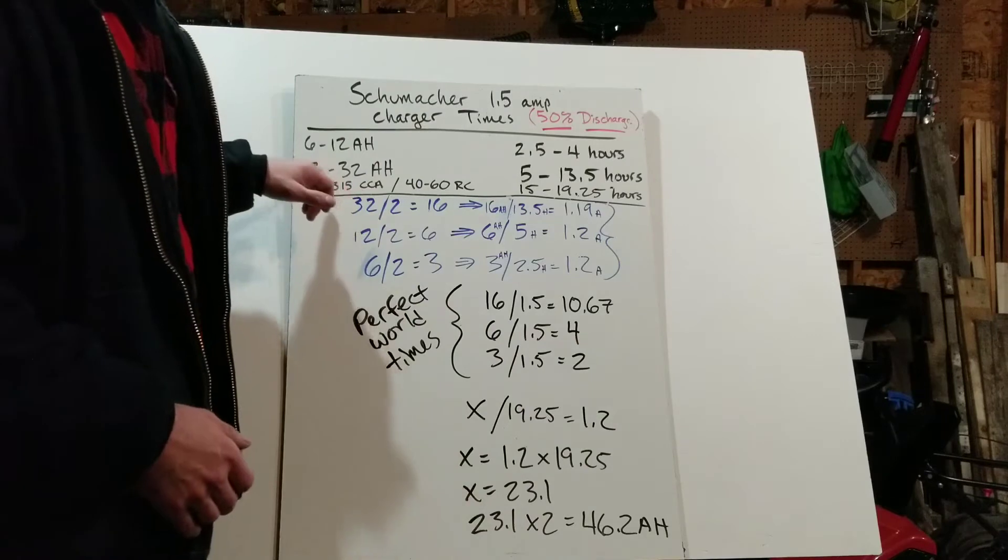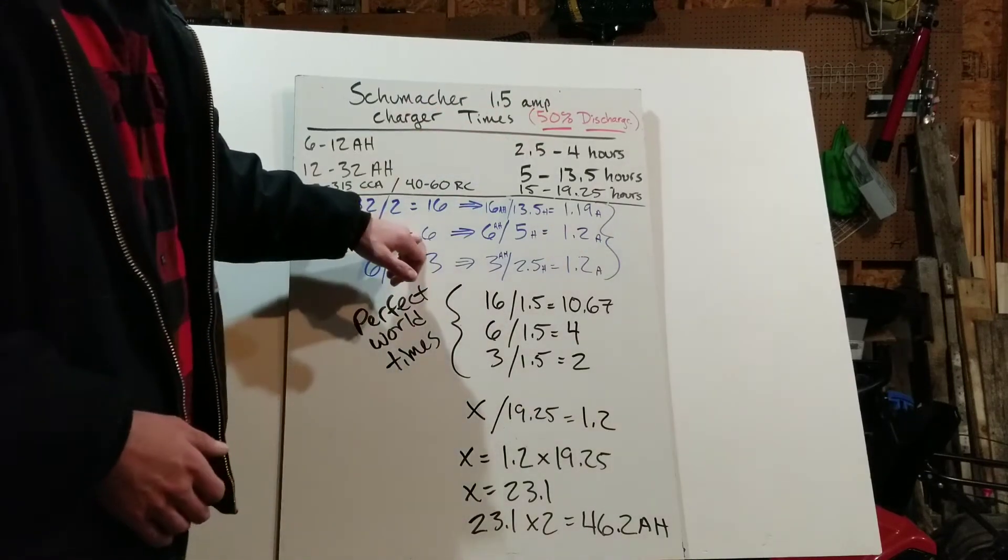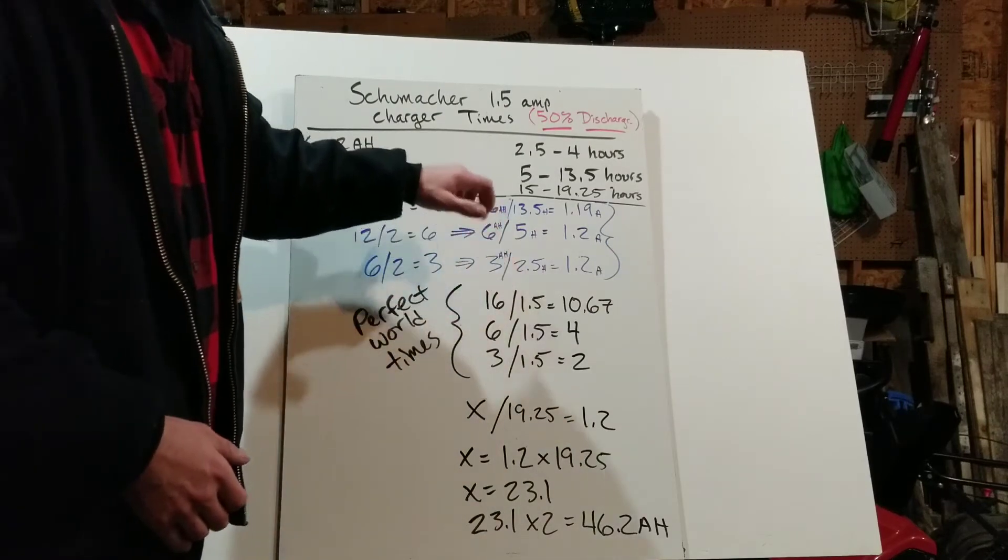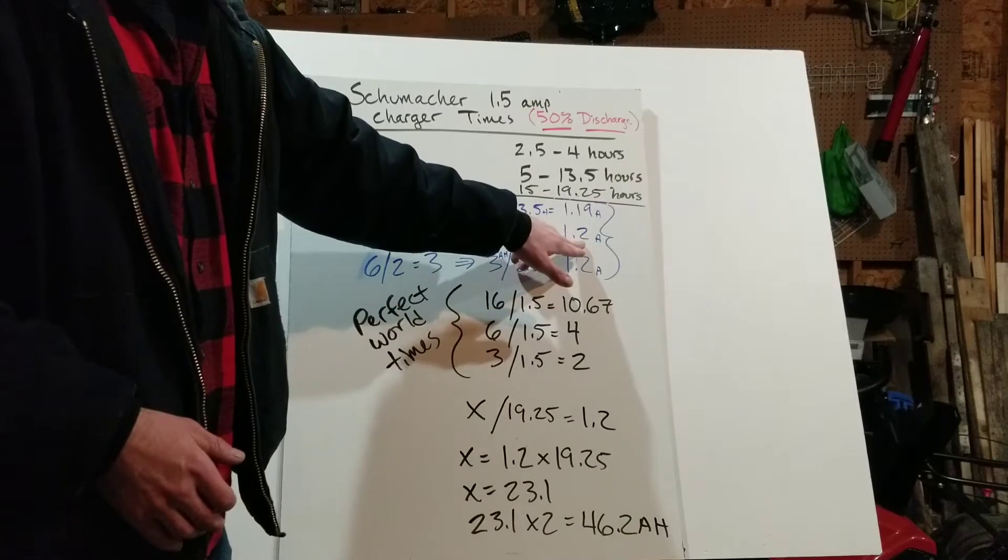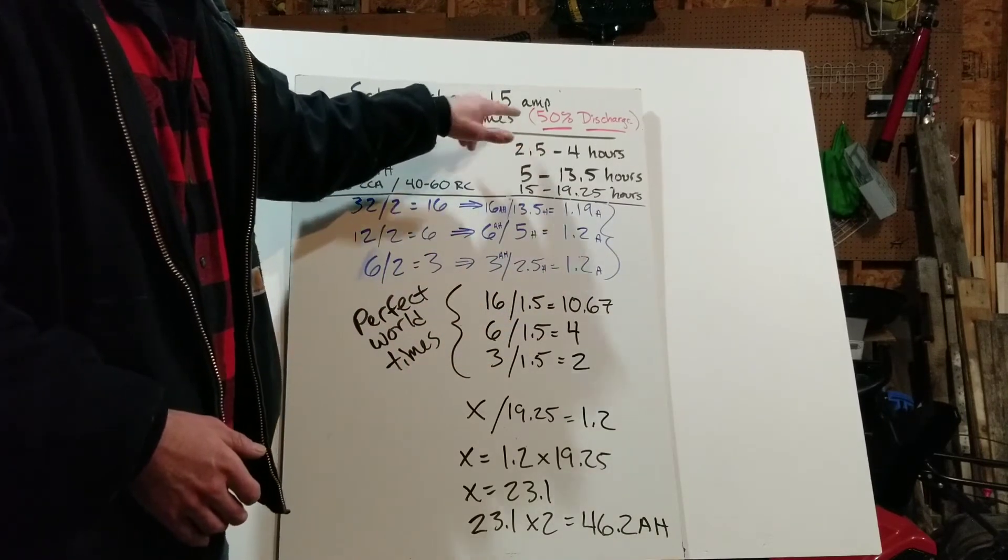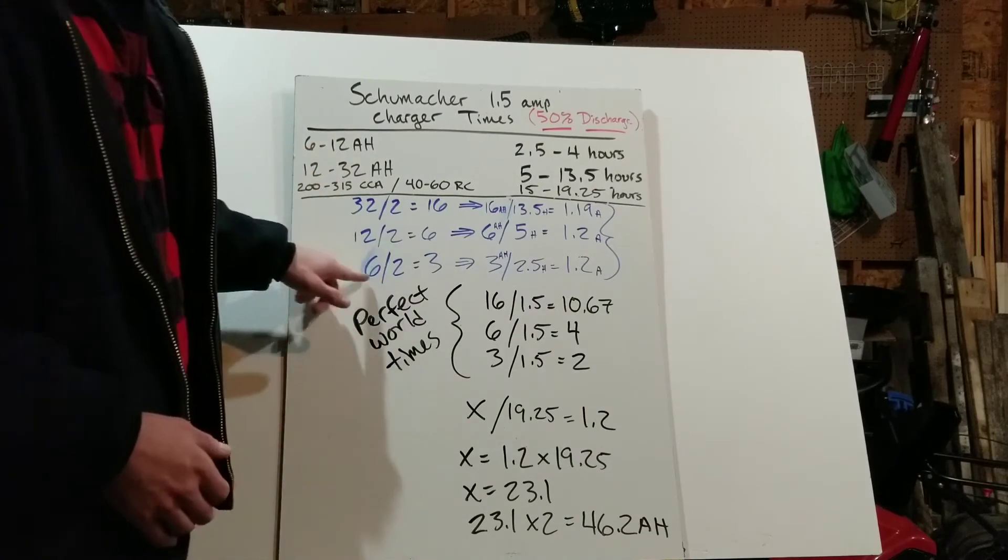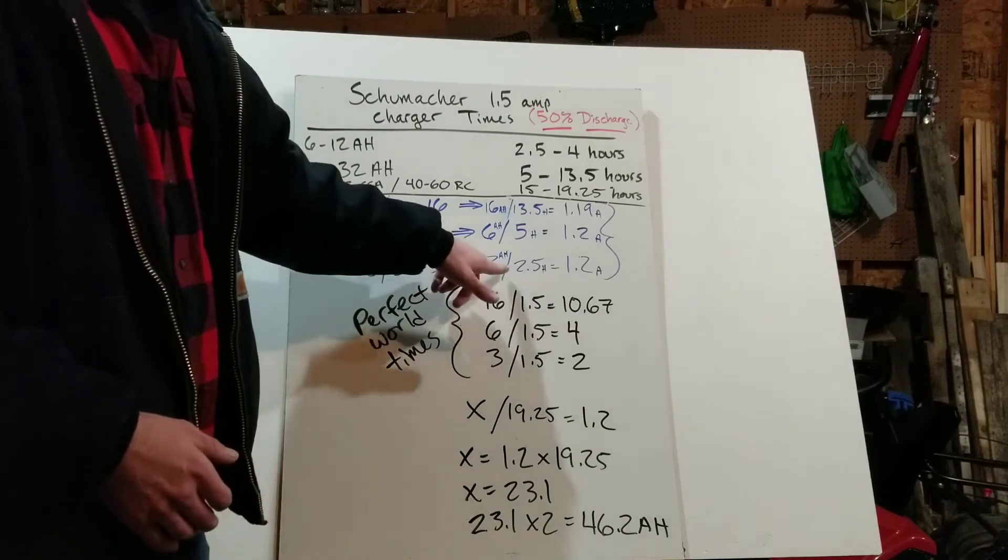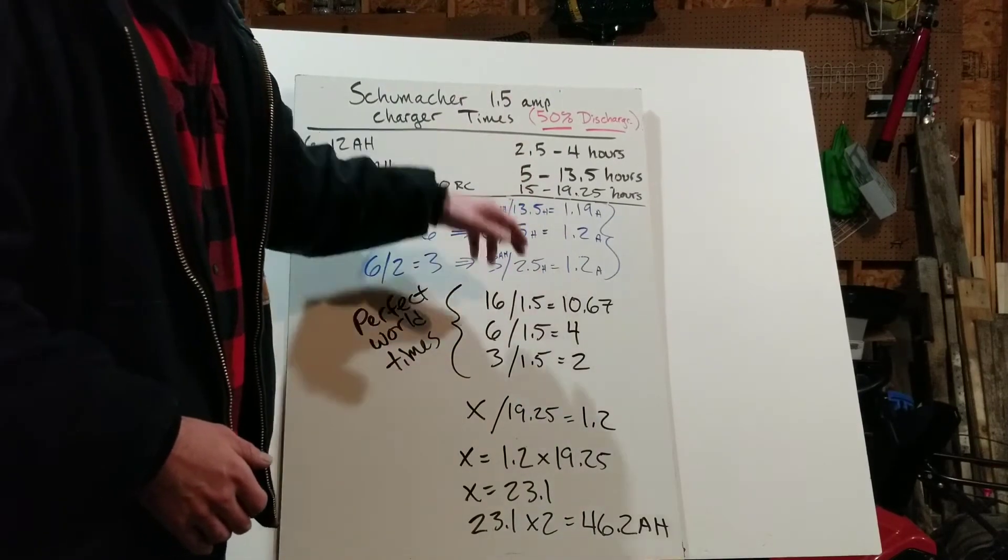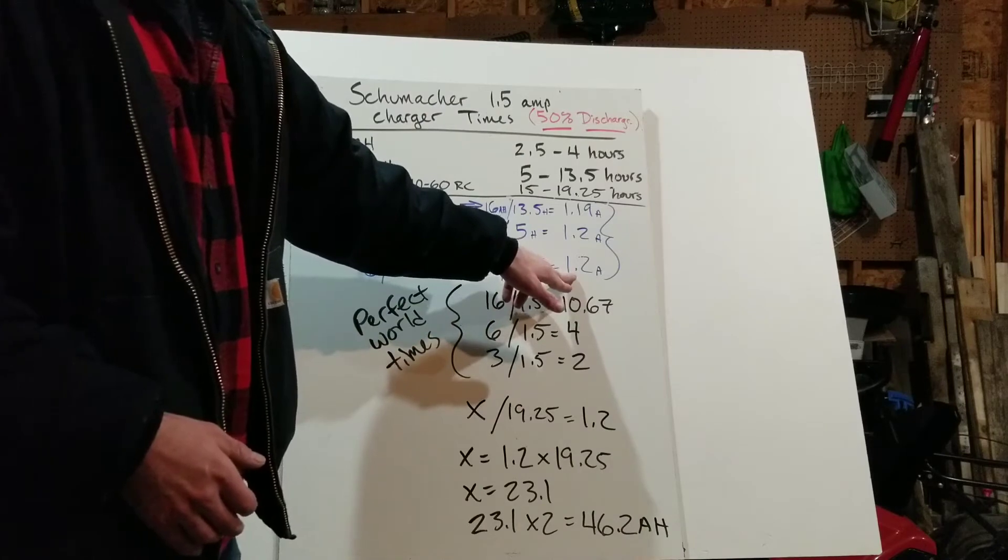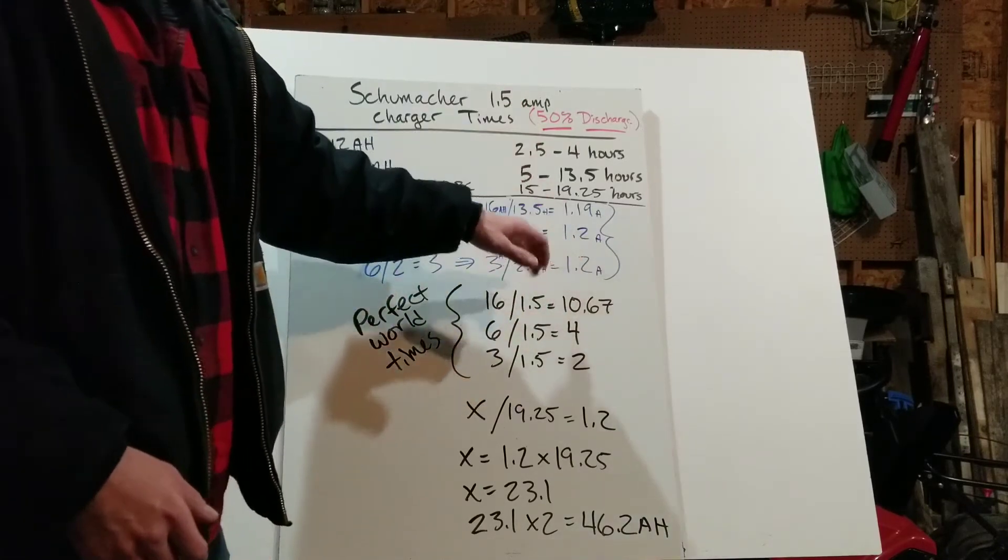Same thing if we do 12 here. 12 divided by two for 50% gives us six. Six amp hours divided by the five hours here is going to give us 1.2 amps. So that's 80% of 1.5. And if we do six, for example, six divided by two gives us three, three amp hours, divided by 2.5 hours charging time for 50% gives us 1.2 amps as well per hour on average, and that's 80%.